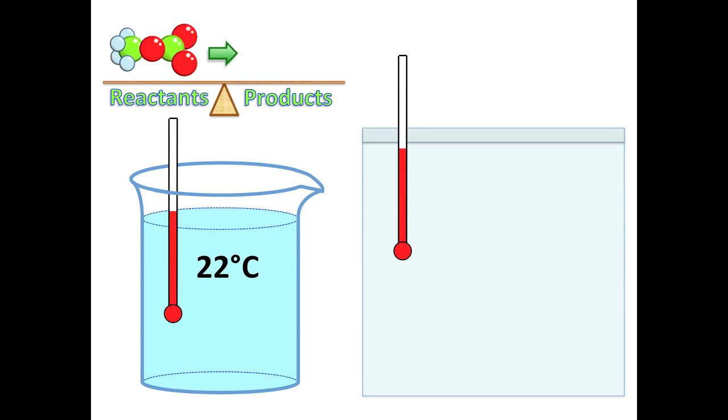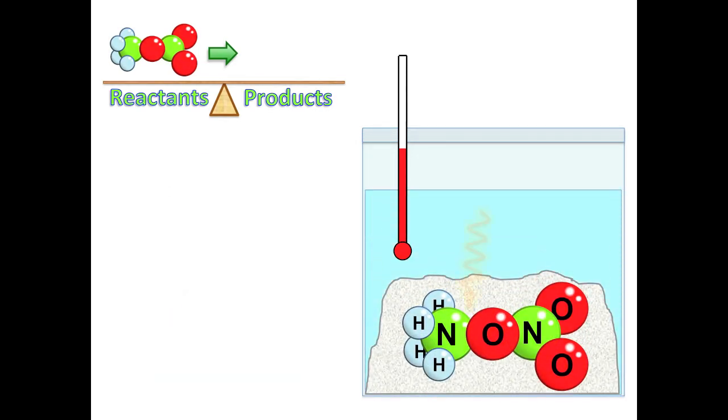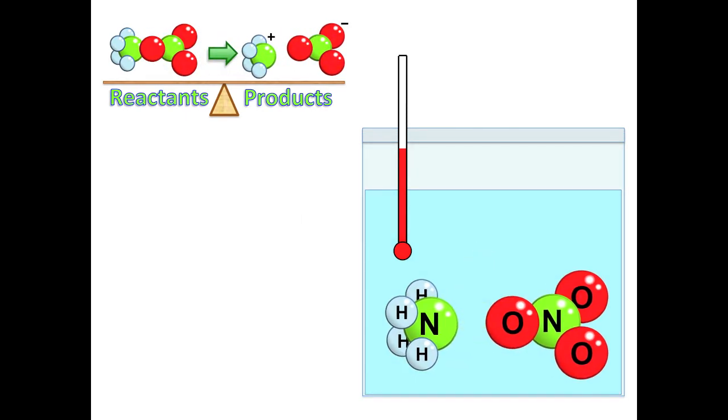Here's the animated version. We placed ammonium nitrate in a bag and then added room temperature water. This caused the bonds to break between the ammonium and the nitrate, which absorbed the heat from the water.